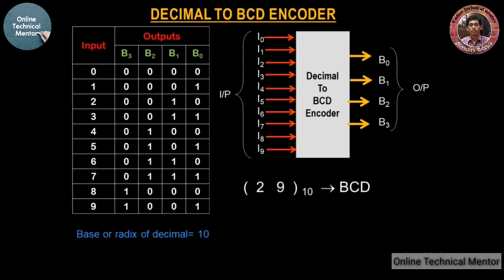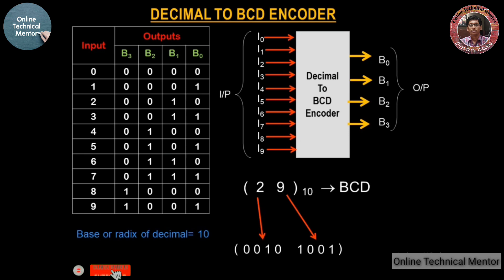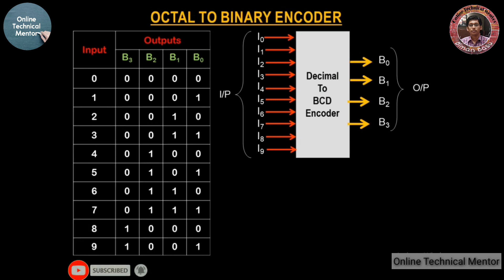Let's take an example: convert 29 in decimal to BCD. You convert each digit individually — not the whole number to binary. So 2 is written as 0010 and 9 is written as 1001. You can verify in the truth table that 2 is 0010 and 9 is 1001, giving BCD of 29 as 0010 1001.